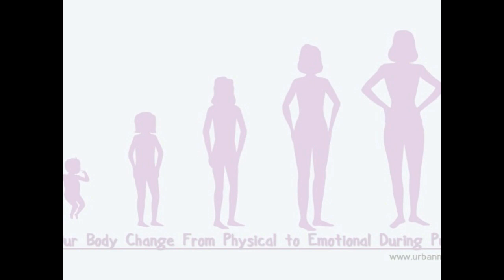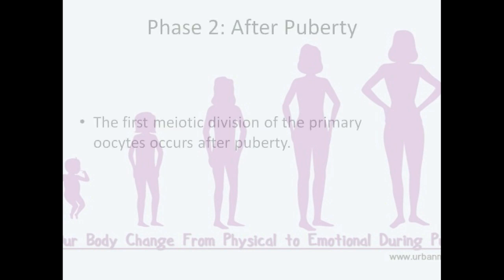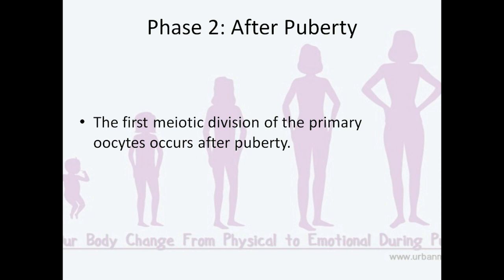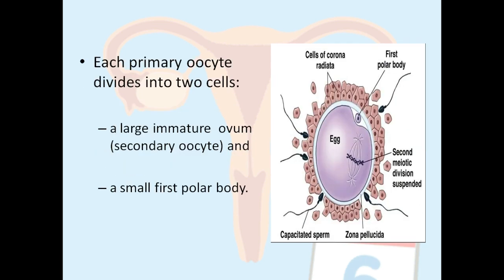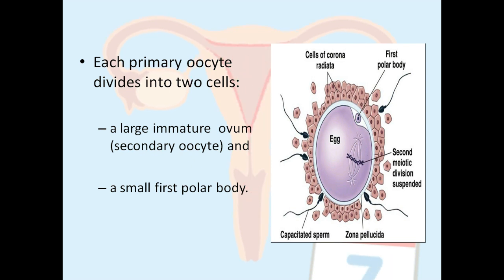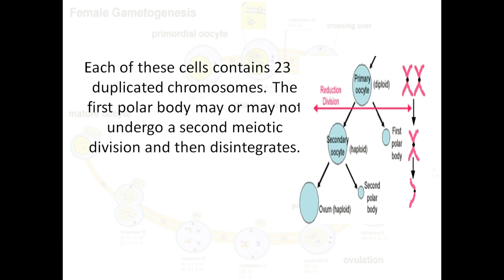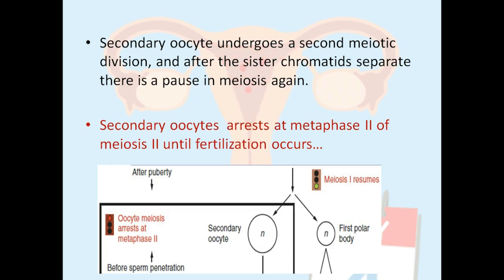Phase two starts at the onset of puberty. Primary oocytes, which were suspended in prophase one of meiosis one, now complete their first meiotic division. After completing it, primary oocytes undergo the second meiotic division and differentiate into a secondary oocyte — a large immature ovum — along with the first polar body. The division is asymmetrical, which is why the polar body is so small. Each of these cells contains 23 duplicated chromosomes. Primary oocytes were diploid; secondary oocytes are haploid, having a single copy of each chromosome.